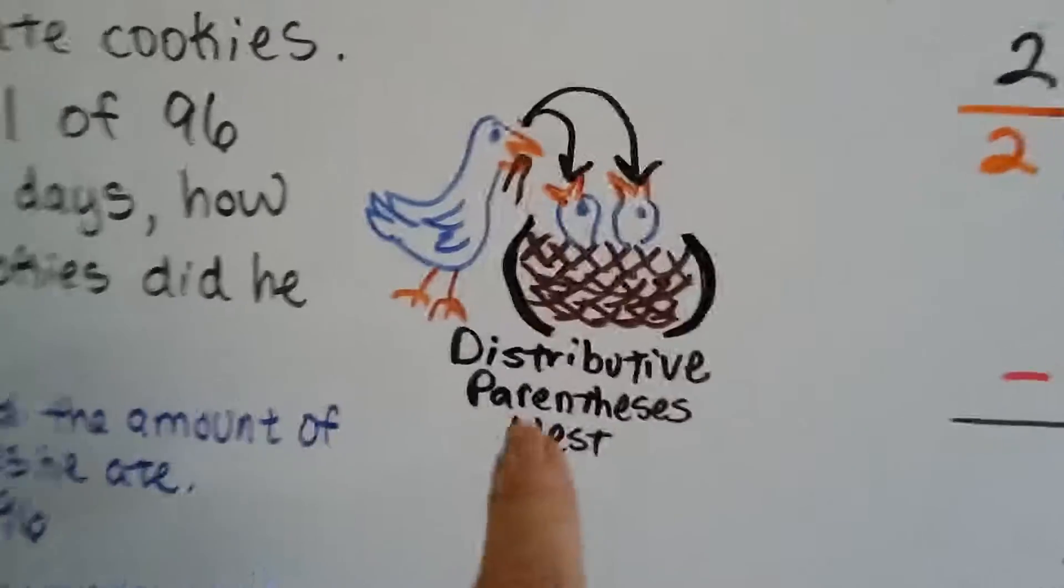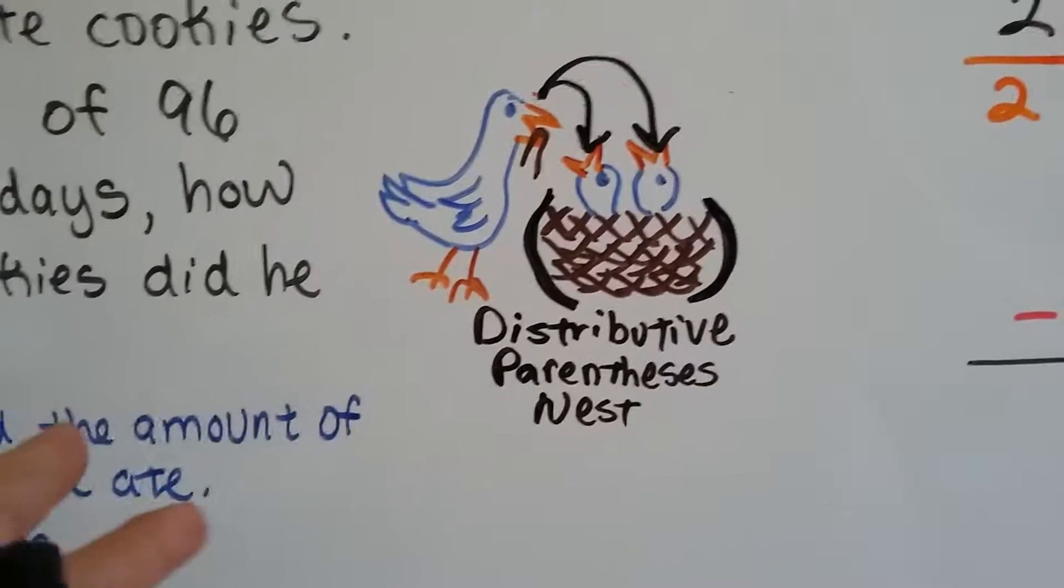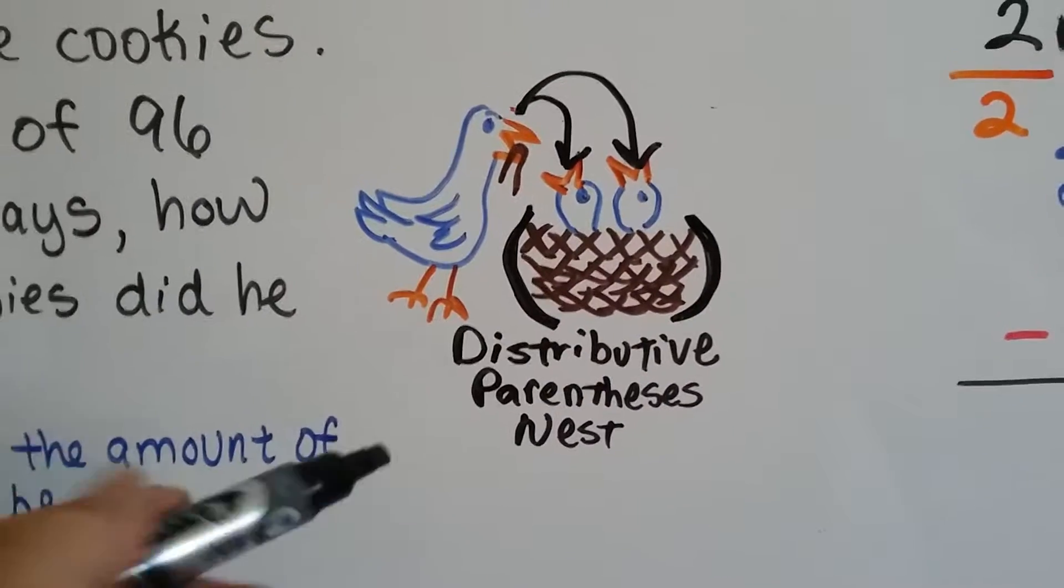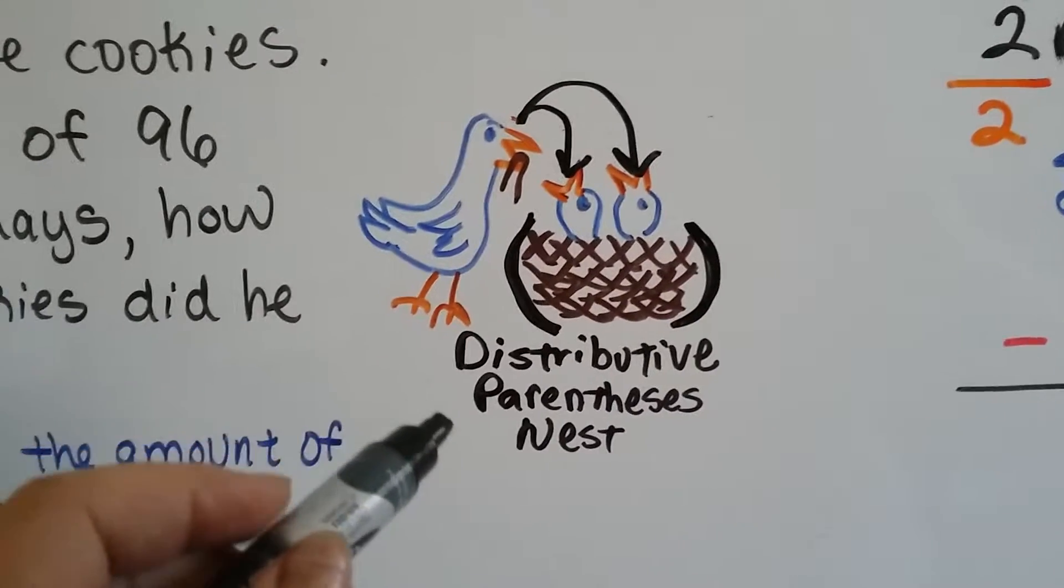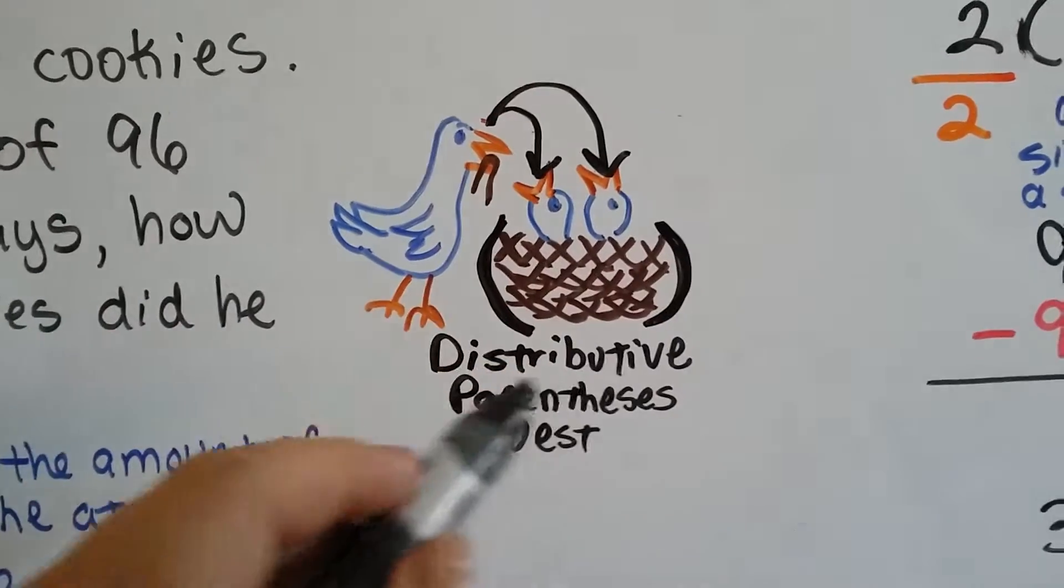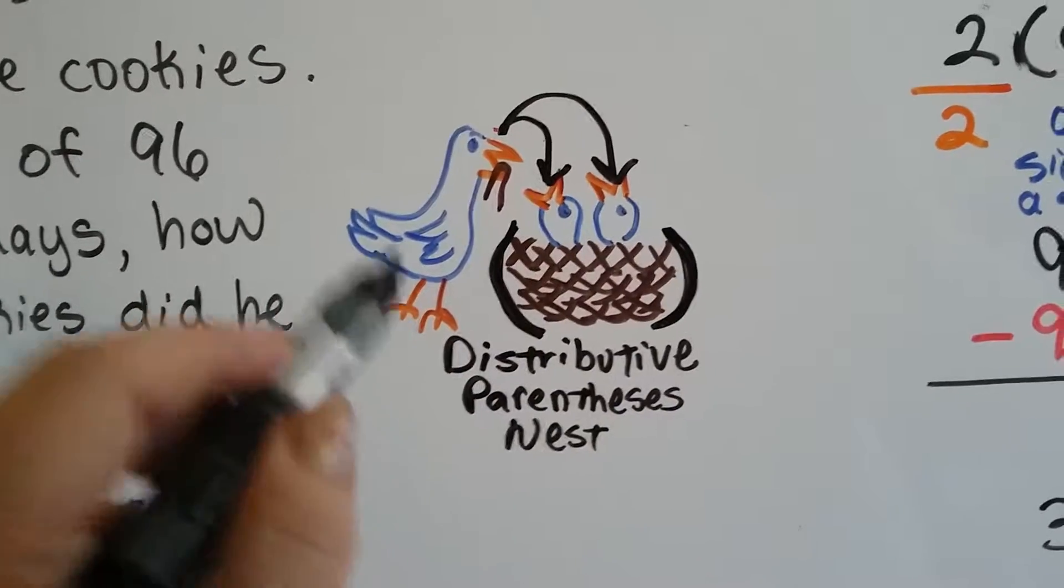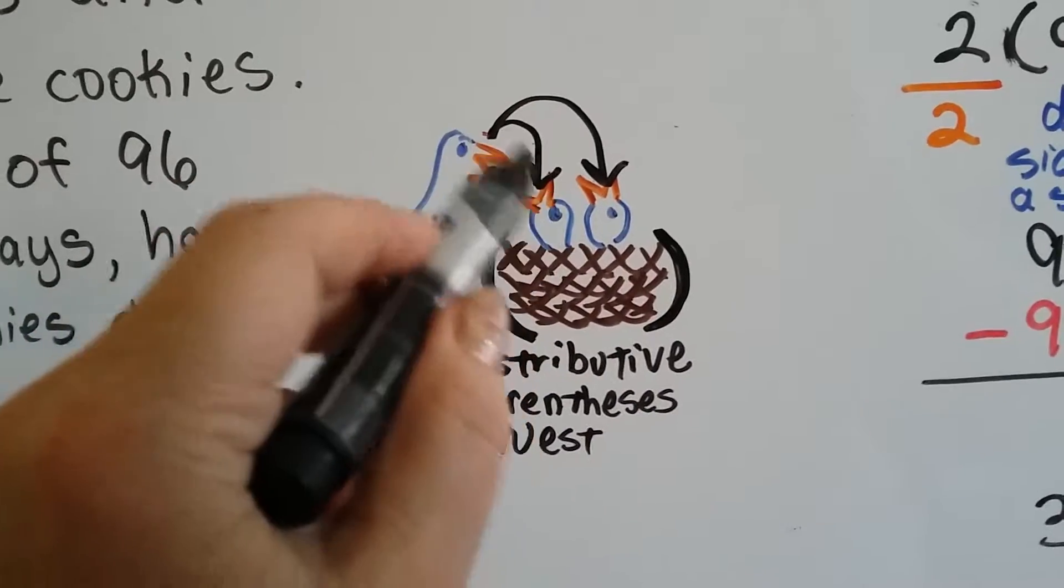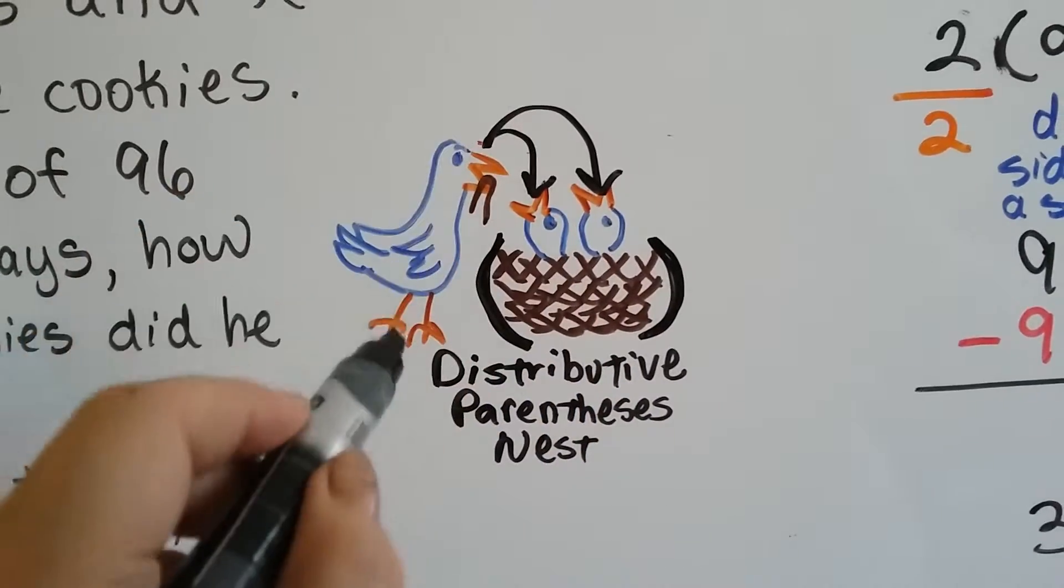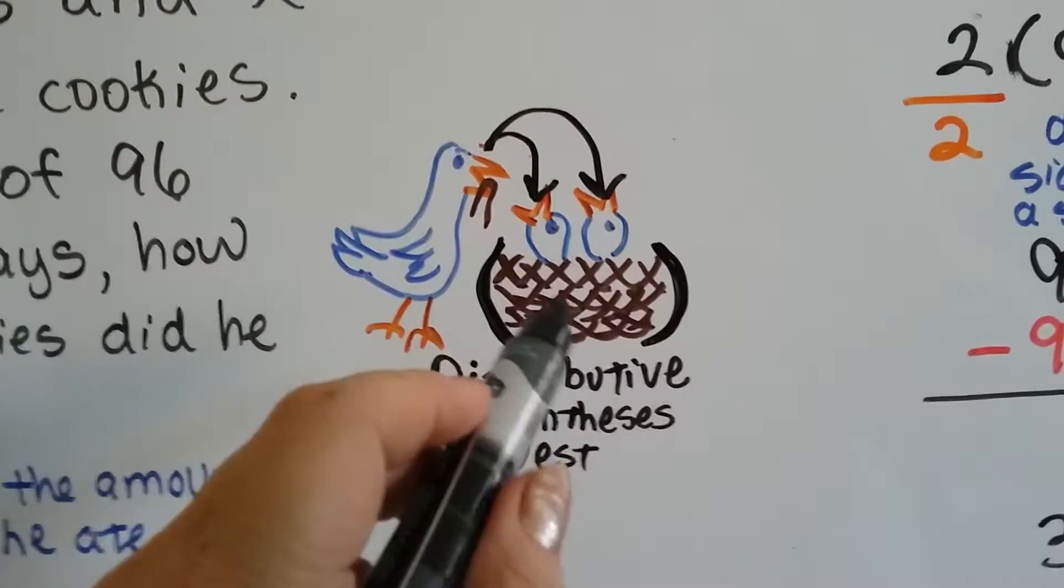The first thing I want to remind you of, if you've seen my videos before, you know about my mother bird and her babies. We have a distributive parentheses nest. The number on the outside, or the mother bird, takes turn feeding each one. She doesn't skip one. She doesn't want one to starve. So she has to equally give each one food.